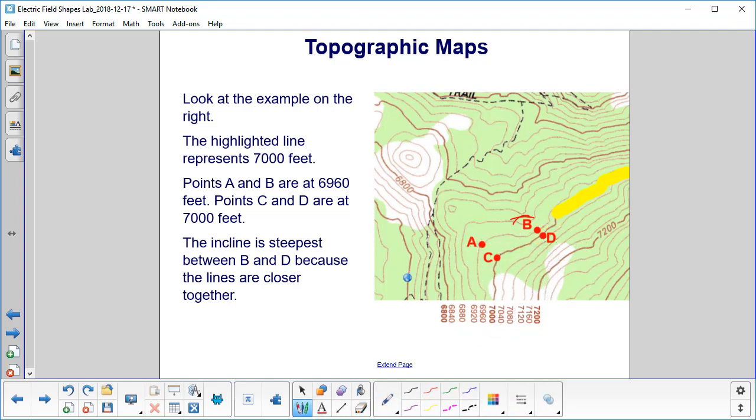The incline is steeper between B and D because the distance between the lines is smaller. The lines are closer together, which means it's probably going to be harder to walk in this area because the hill is going up more like that.